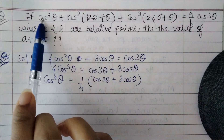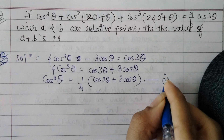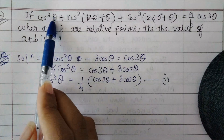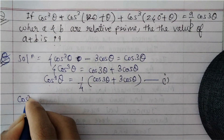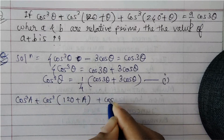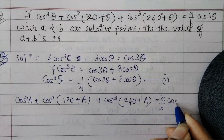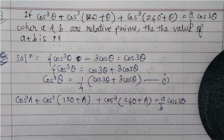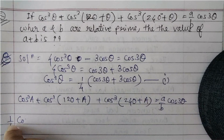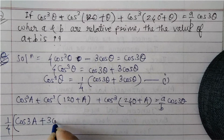We will use this expression for cos³θ in the LHS of the question. Let us assume θ = A, so the LHS becomes cos³A + cos³(120+A) + cos³(240+A). Applying the formula: cos³A = (1/4)(cos3A + 3cosA).